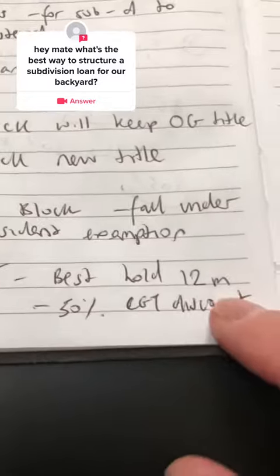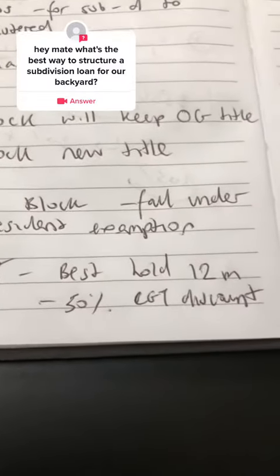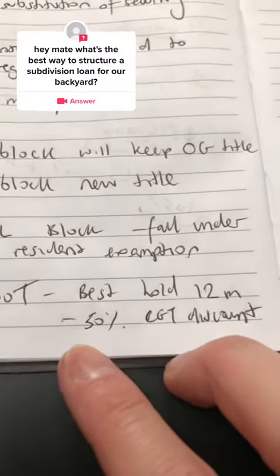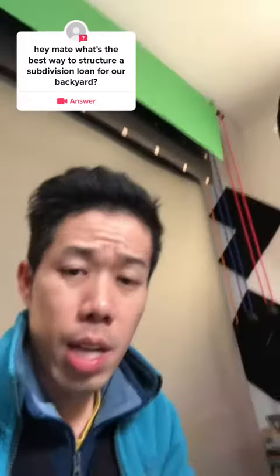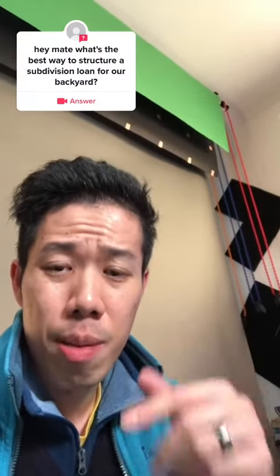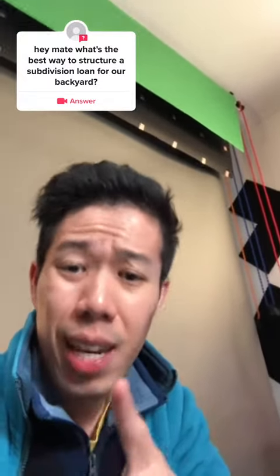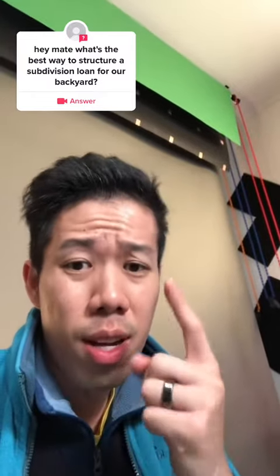So it's best to hold it for 12 months. The rule is if you hold it for 12 months minimum, you get 50% CGT discount. If you plan to sell it on the get-go, once the subdivision's been approved, you'll get 100% CGT tax on your overall income.